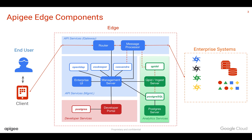The developer portal uses Postgres as a database to store all developer portal related content. That's a high-level overview of Apigee Edge components. You never deal with these components individually — you just interact with the Apigee Edge API management platform, and Apigee takes care of upgrading all these individual components as part of its releases.